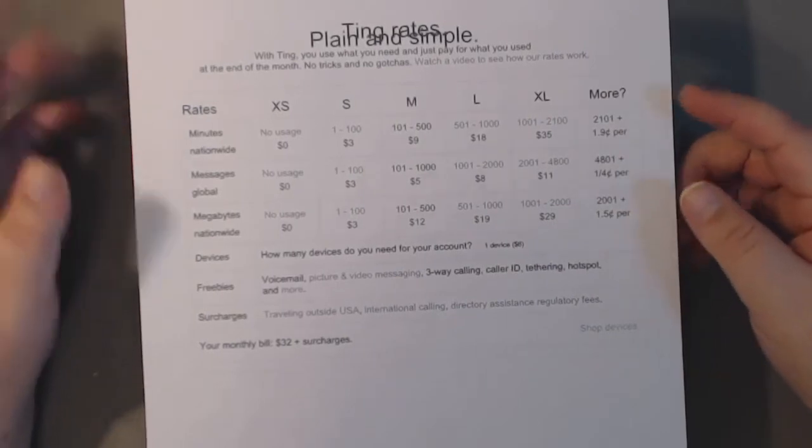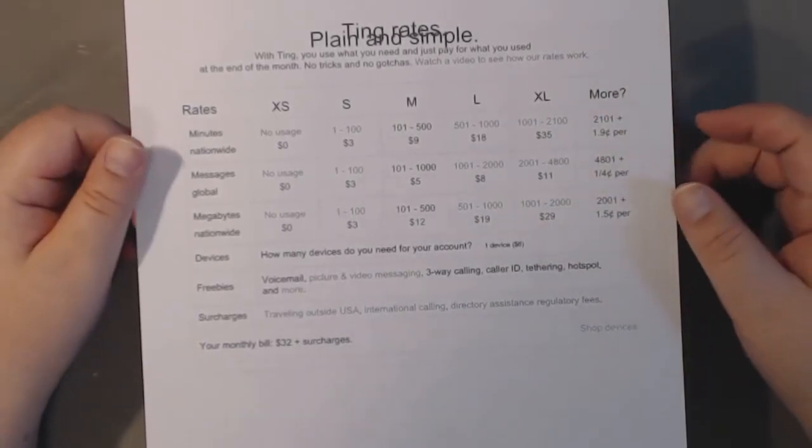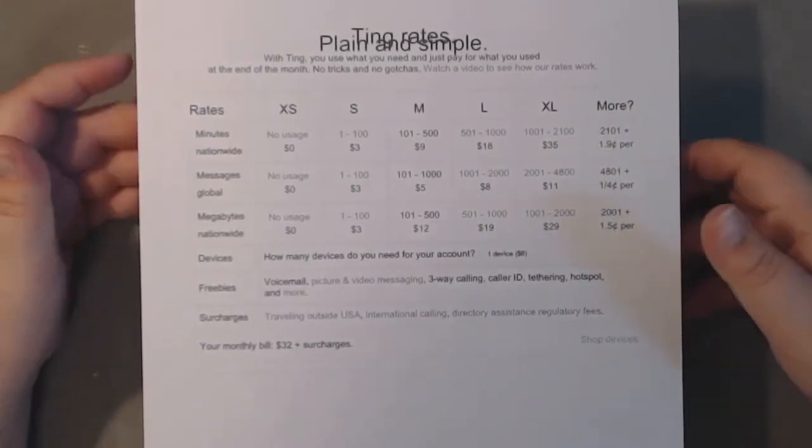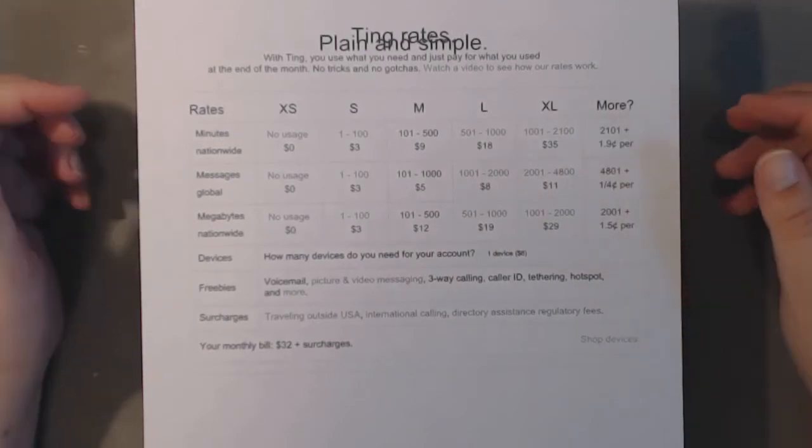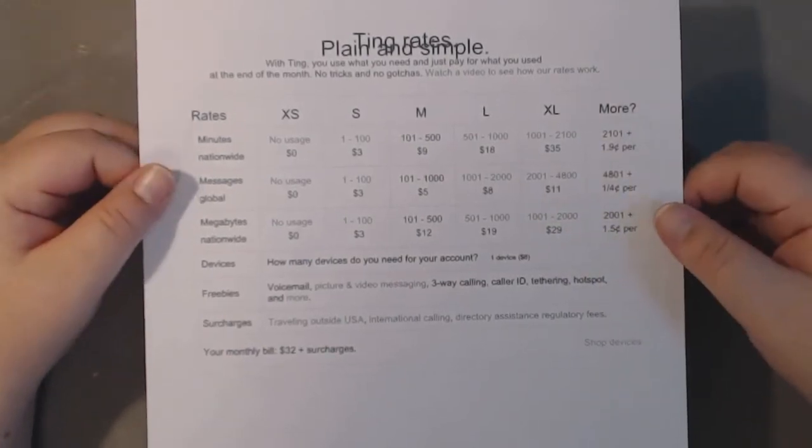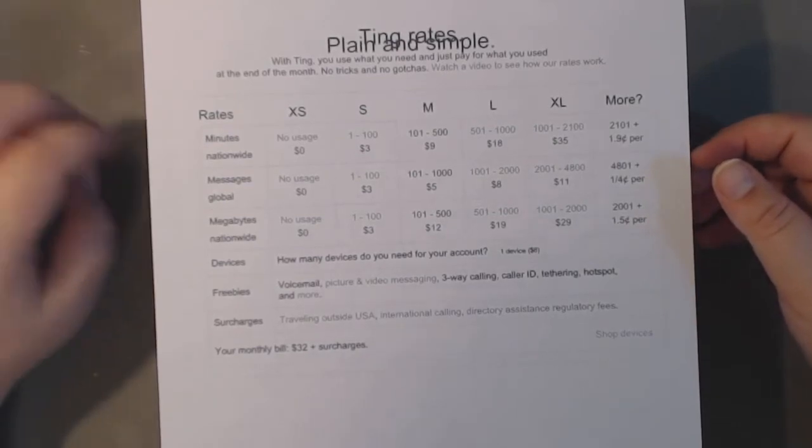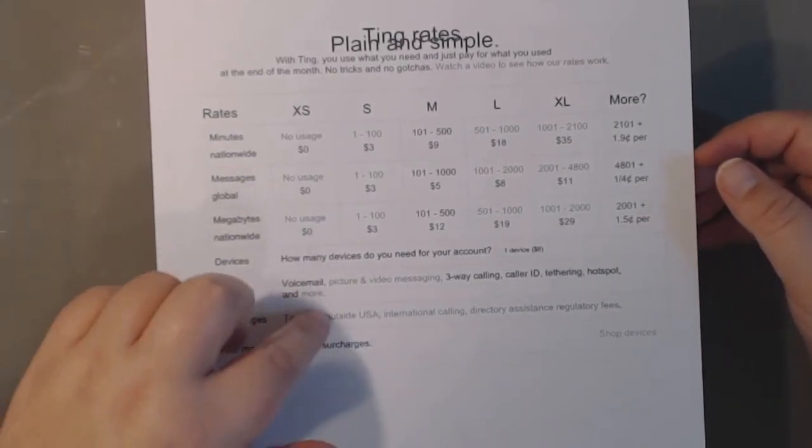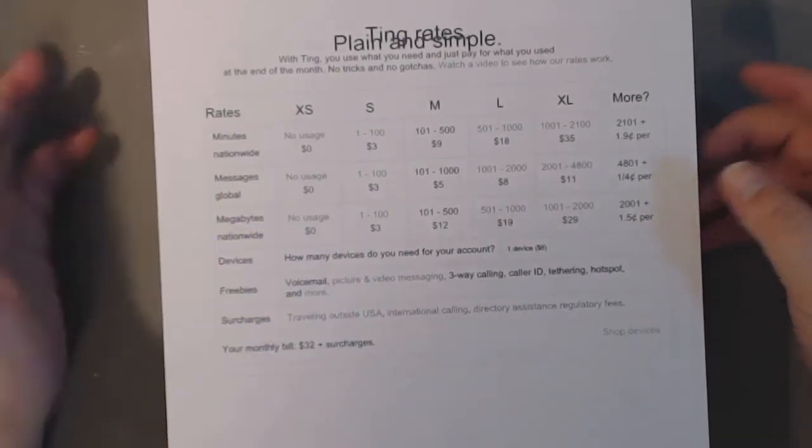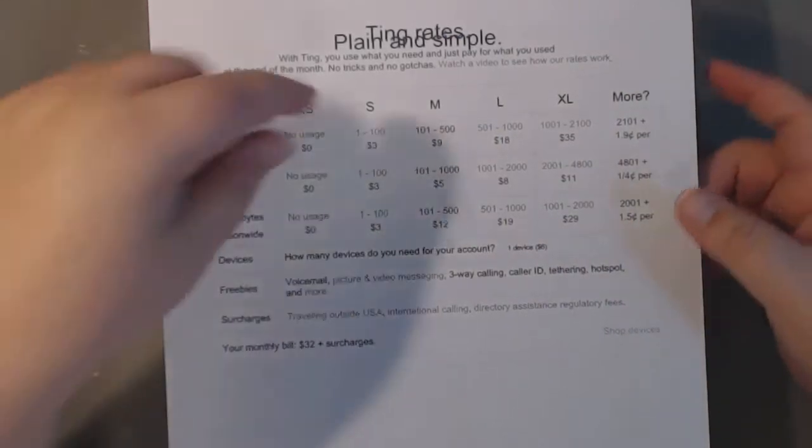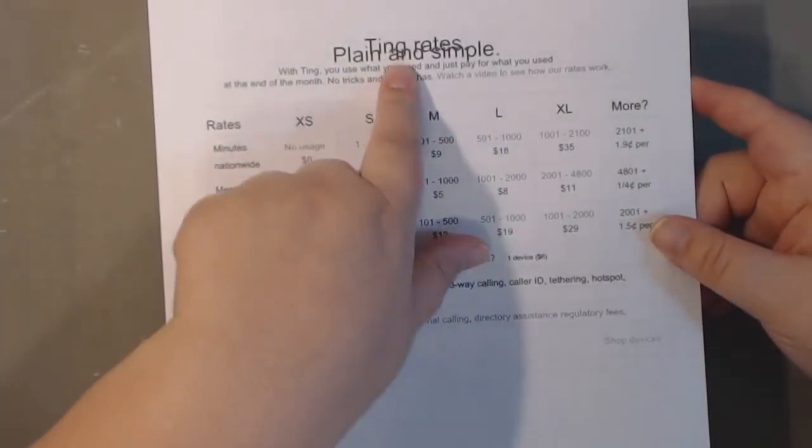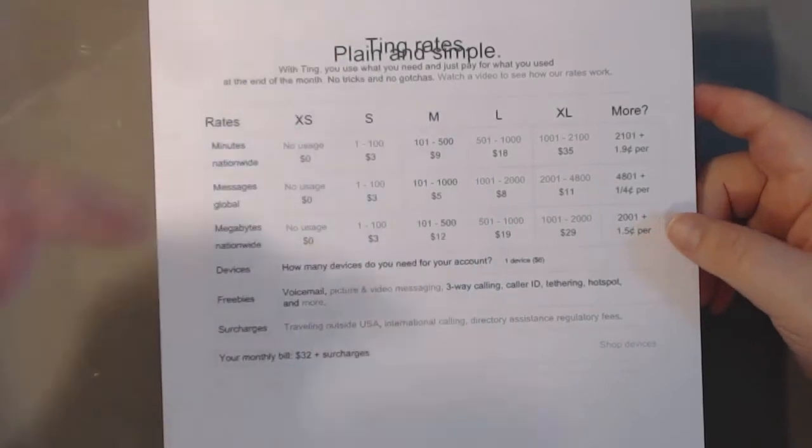My husband reads articles and does research on this stuff all the time, and this was like a super hidden gem that he found. This is for basically if you're a Sprint customer and you're wanting to leave. It's called Ting, and I don't know why, but my little chart here printed off kind of funny.